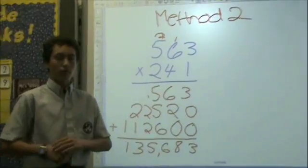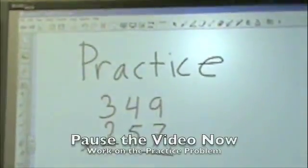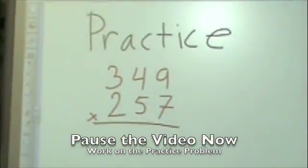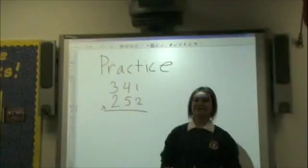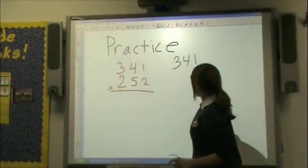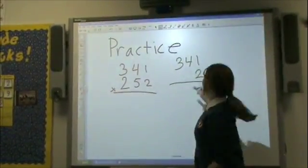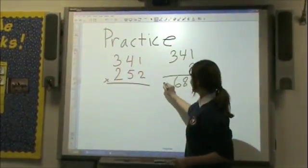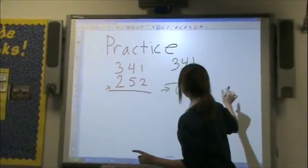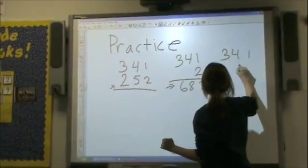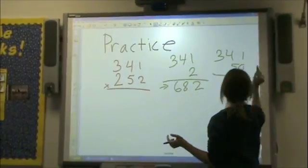Now let's go to Catherine for our very last problem. Here's a practice problem for you to do — pause the video and work it out either way you like. When you're done, start the video up again and we'll check it for you. Let's use Method 1. That's 341 times 2, since it's in the ones place, giving us 2, 8, and 6 — so 682 is our first partial product. And then we're going to do 341 times 50 since it's in the tens place.